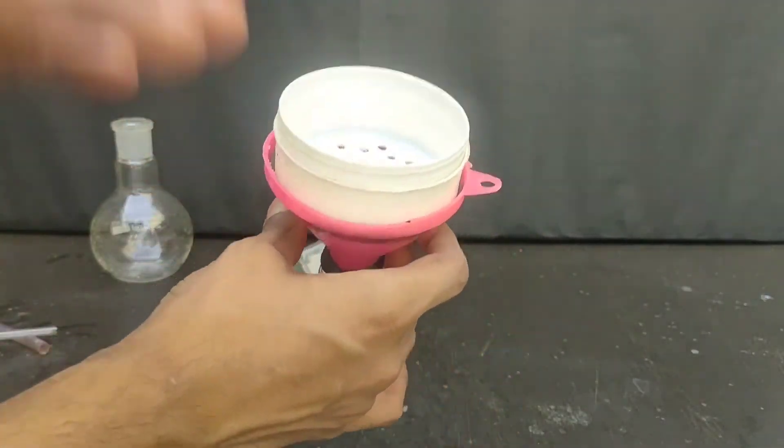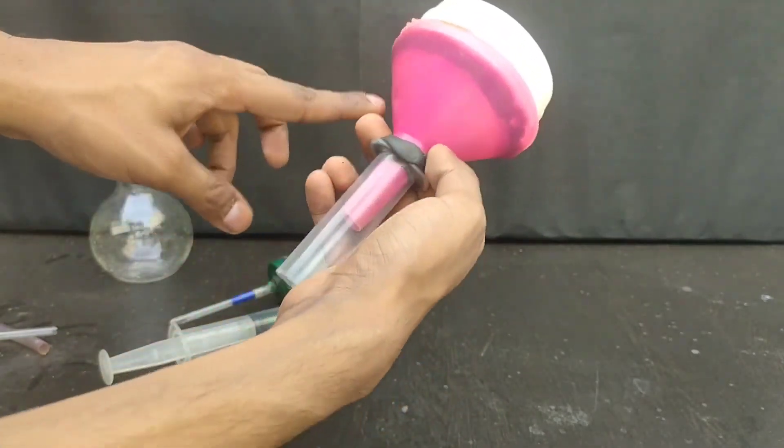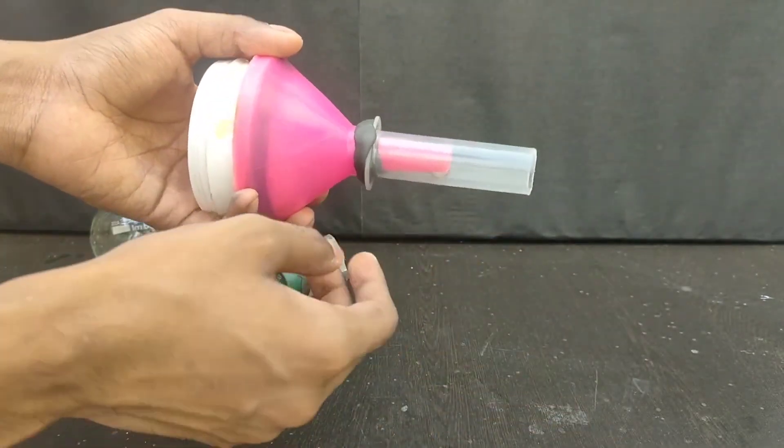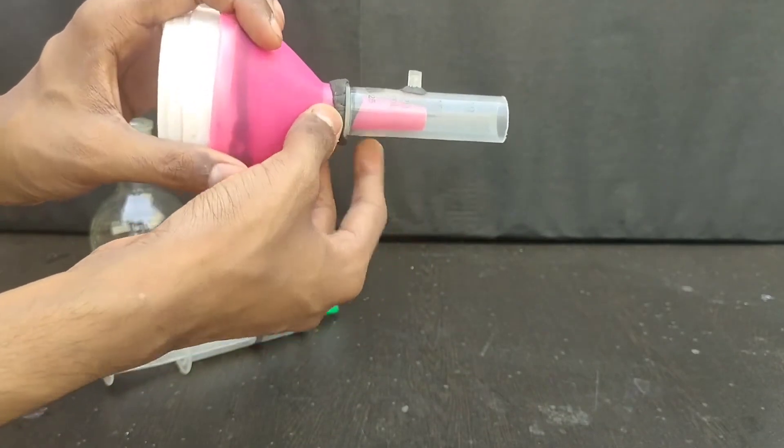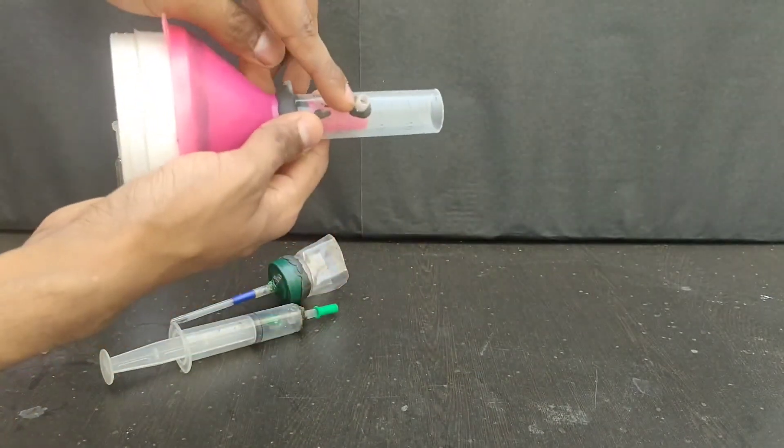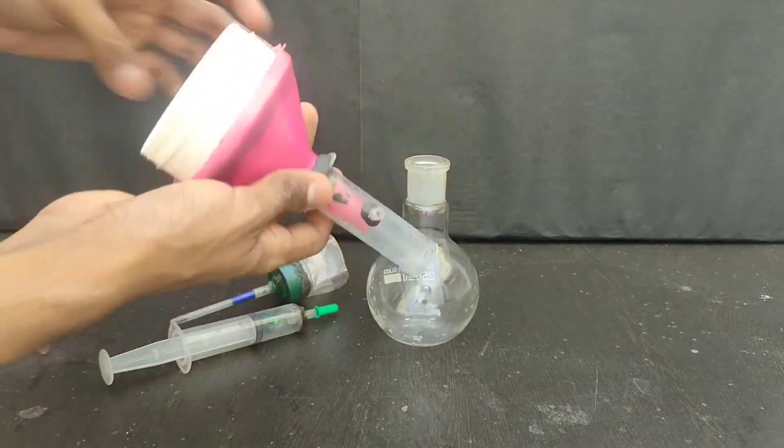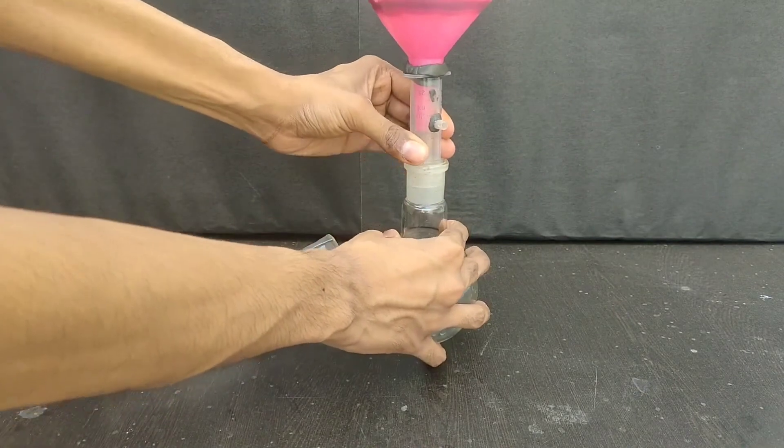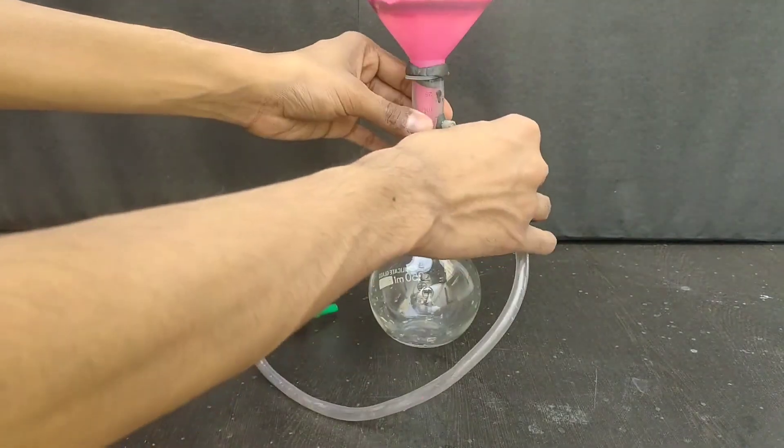Then I used epoxy putty and sealed the container with this normal funnel. Then I used epoxy putty to join a syringe pipe with this funnel and also placed a hose for the vacuum pump. Now this syringe pipe fits very well into this flat bottom flask of B24 fitting.